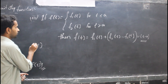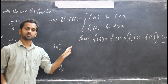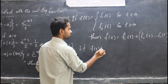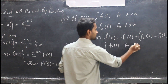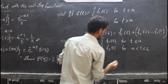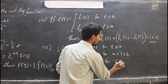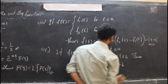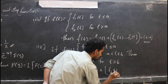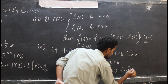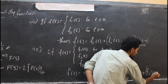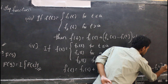Property number 4: when f(t) is a piecewise function defined as f₁(t) for t ≤ a, f₂(t) for a < t ≤ b, and f₃(t) for t > b, we can represent it as: f(t) = f₁(t) + [f₂(t) − f₁(t)]·u(t − a) + [f₃(t) − f₂(t)]·u(t − b).